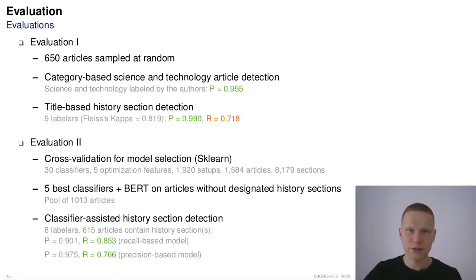In a second evaluation, we therefore first cross-validated 30 SK-Learn classifiers with five optimization features, resulting in almost 2,000 setups, against more than 1,500 articles containing more than 8,000 sections.